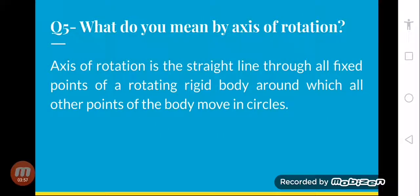Question number five is, what do you mean by axis of rotation? Unit number two mein humne axis of rotation ke baare mein thoda sa padha tha. In rotatory motion, axis of rotation is the straight line through all fixed points of the rotating rigid body around which all other points of the body move in a circle. Koi bhi rigid body agar kisi ek point ke gird puri ki puri body spin kare, to woh us point ka axis of rotation hoga. Yeh ek imaginary line hoti hai jo hum body ke mid mein imagine karte hain, aur us point pe woh puri ki puri rigid body rotate kar sakti hai.